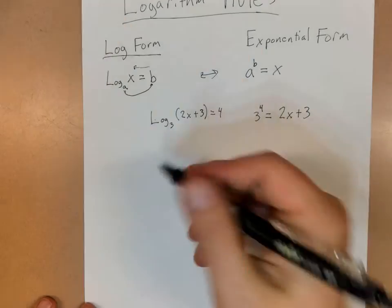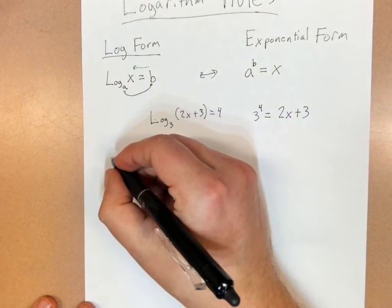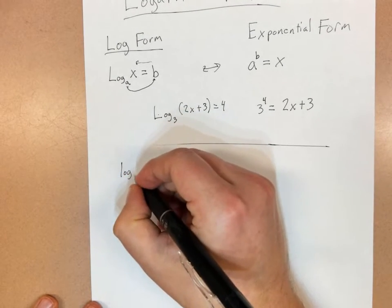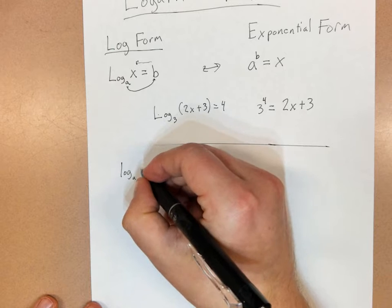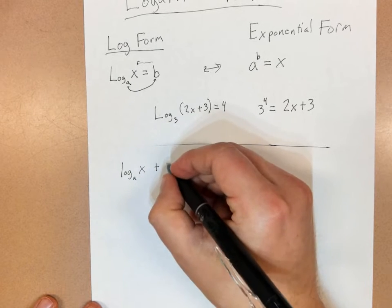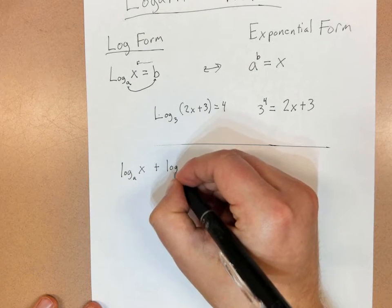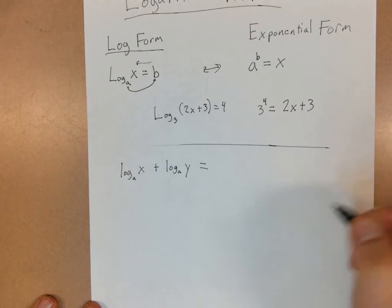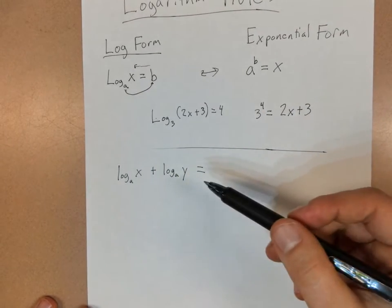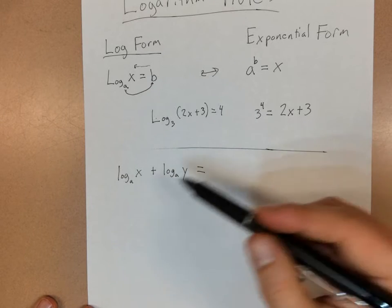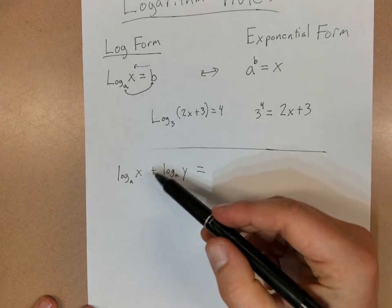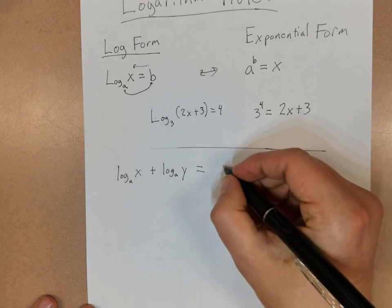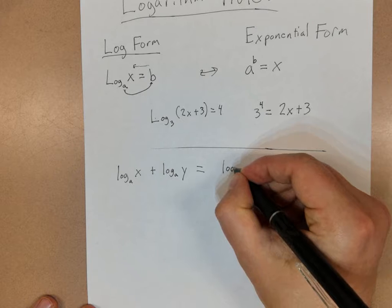Some other log rules would be, let's say that we're adding two logs. So if I add log base A of x plus log base A of y, what does that equal? This is called condensing logs. Again, know how to go back and forth between these two. But whenever you're adding logs, as long as they have the same base, you can put them together as one single log.